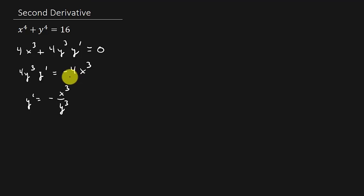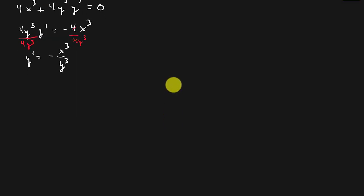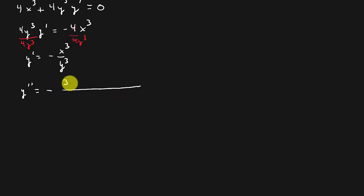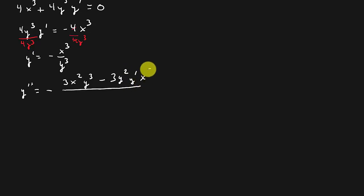Alright, so now we have to take the second derivative. We've got to use the quotient rule. So that's negative — the quotient rule gives us: the derivative of the numerator, 3x squared, times the denominator, y cubed, minus the derivative of the denominator, which is 3y squared — and since we're taking the derivative of a y term, we multiply by y prime — times the numerator. This is all over the denominator squared.